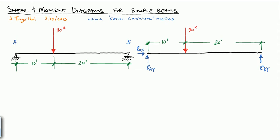We could do this by proportion because the 90 kip load is at the one-third point. Because there's no horizontal load, Rax equals 0, Ray equals two-thirds of 90 kips, which is 60 kips, and Rby is one-third of 90 kips, or 30 kips.